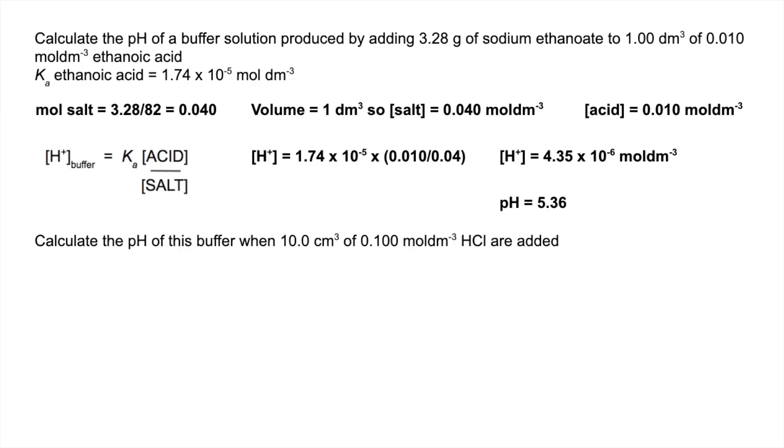So for the second part, the first thing we've got to do is work out the moles of H+ ions that are being added to the buffer solution from this addition of HCl. So just concentration times volume, so there's that many moles of H+ going into the buffer. And that's going to upset the equilibrium, so there's the buffer equilibrium.